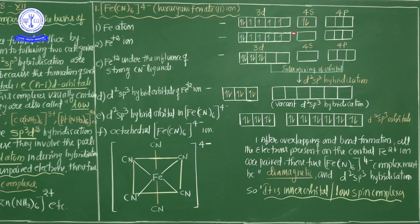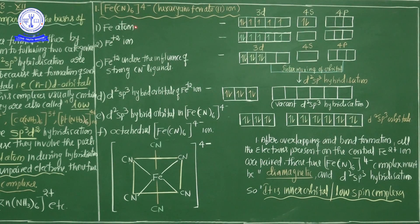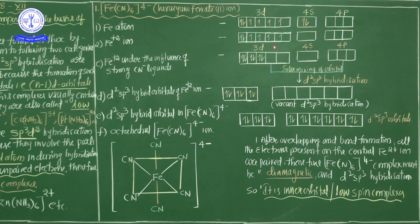Iron undergoes d²sp³ hybridization: 2 D orbitals from 3d, 1 S orbital from 4s, and 3 P orbitals from 4p intermix under the influence of the strong CN⁻ ligand. From the 3d orbital, unpaired electrons pair up forming 2 vacant orbitals. These 6 orbitals intermix to form 6 new hybrid orbitals.